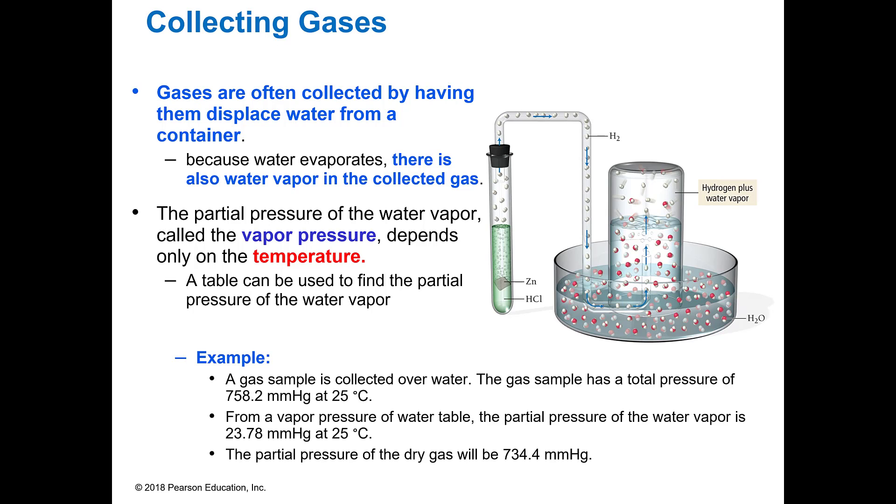Now a lot of times when we're collecting gases, we are going to have to collect them over water. That's just because if we are doing a reaction, that gas we have to capture it and so it's easy to capture it into a beaker or a graduated cylinder with water. If I put zinc and hydrochloric acid and react them together, they're going to produce hydrogen gas and that hydrogen gas is going to come across this tube and bubble into this space. So I'm going to be collecting the hydrogen gas, but because water is here, I'm also going to be collecting water vapor.